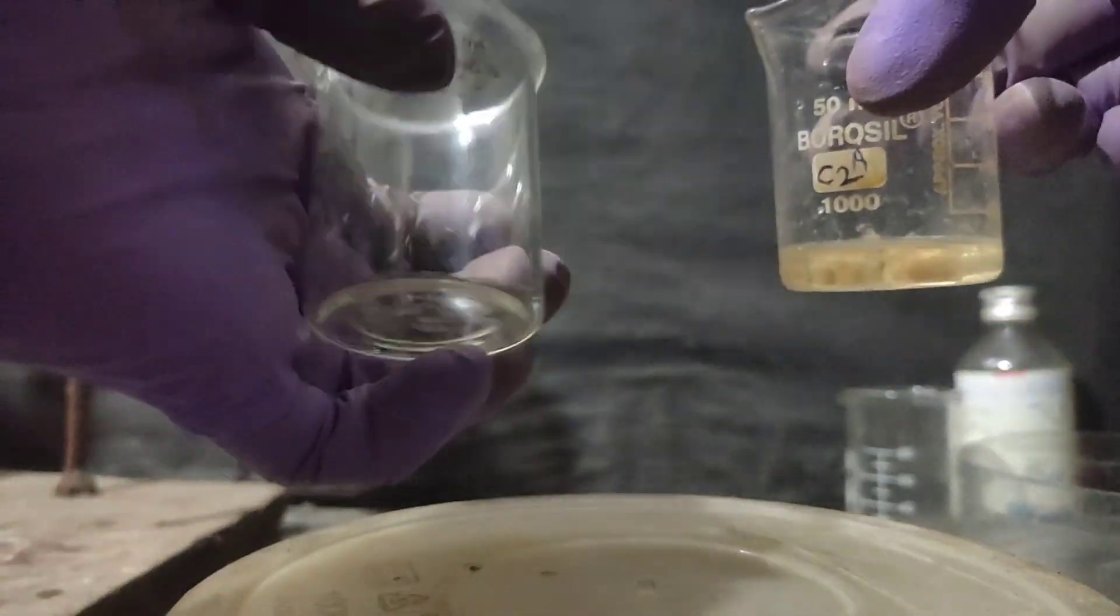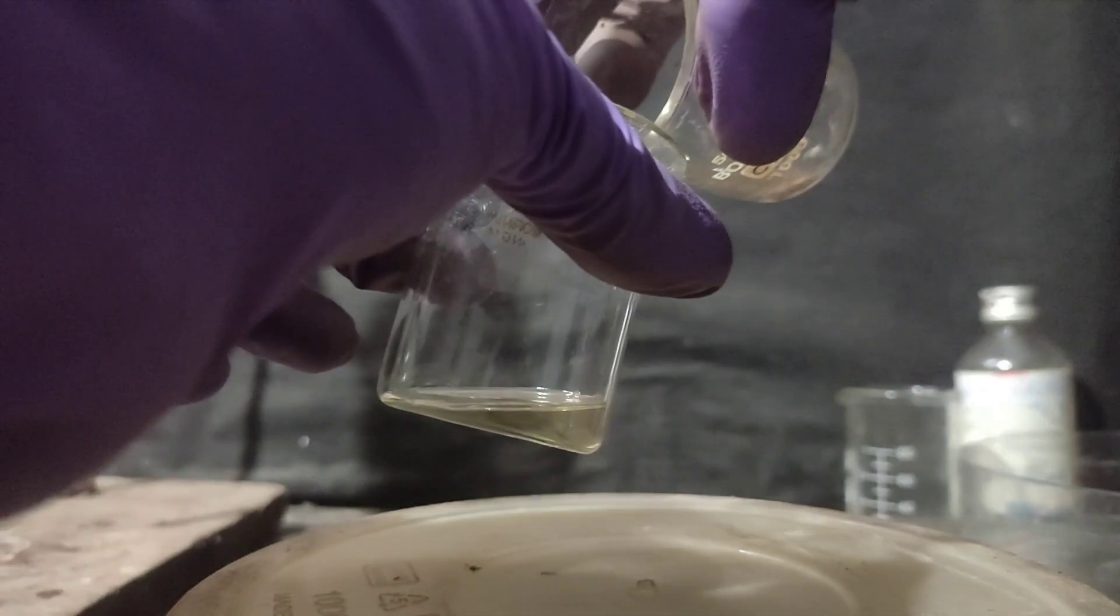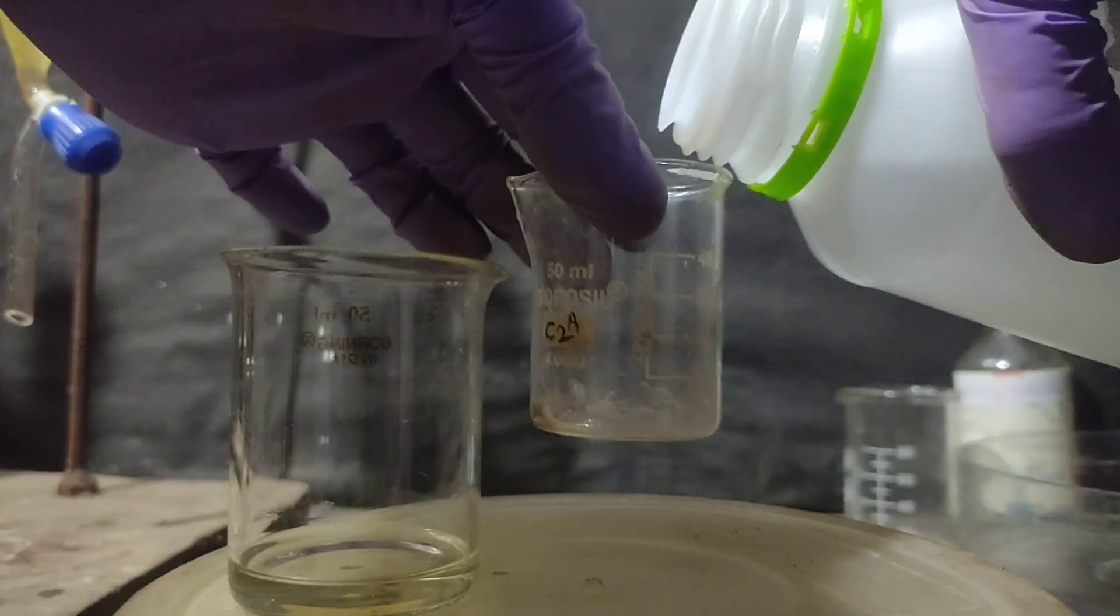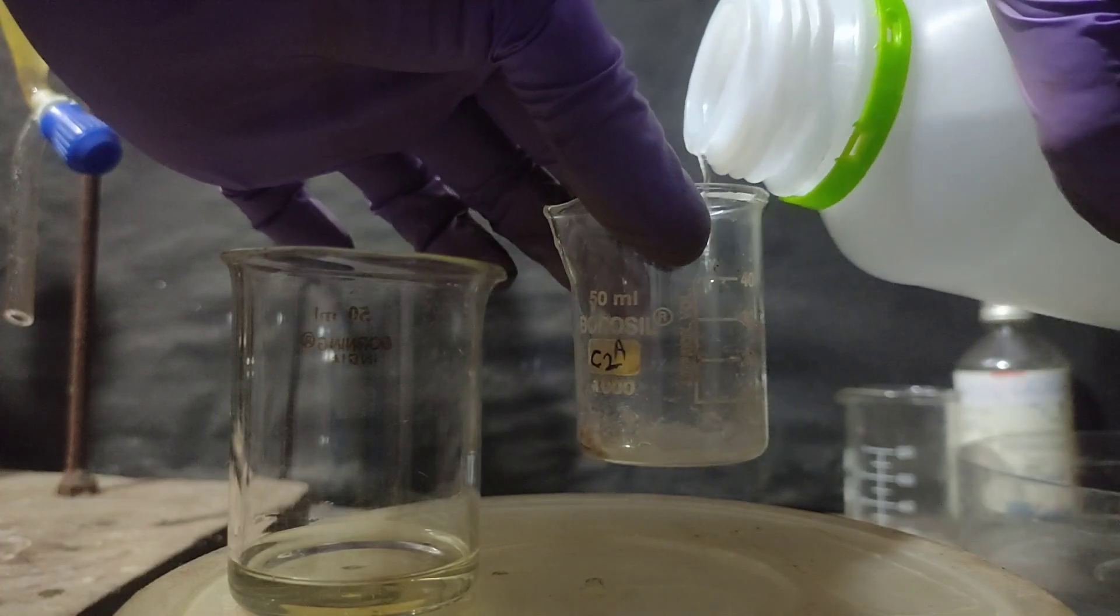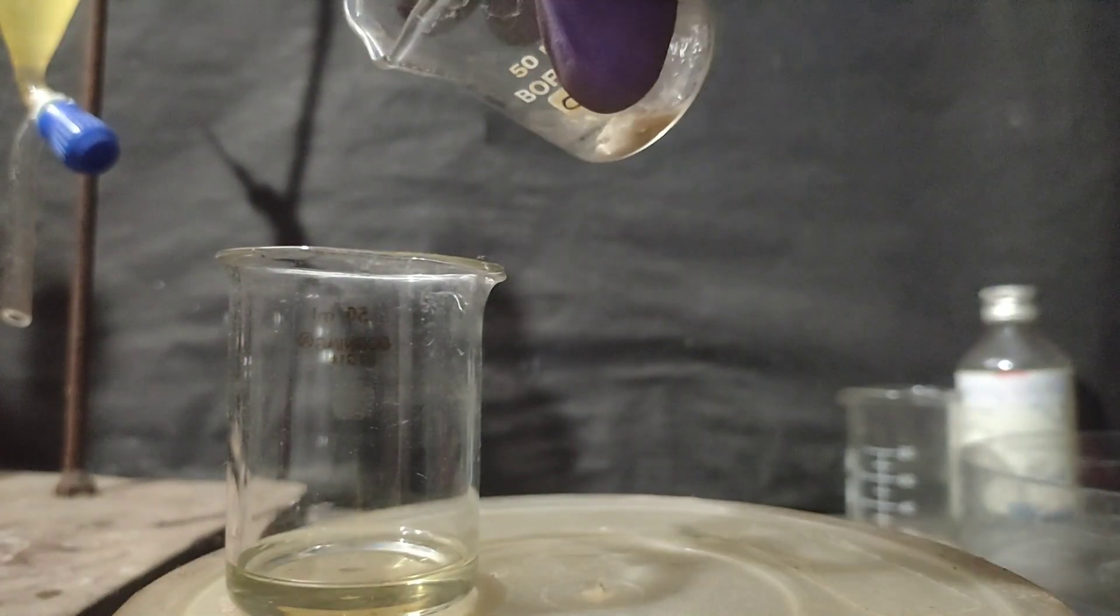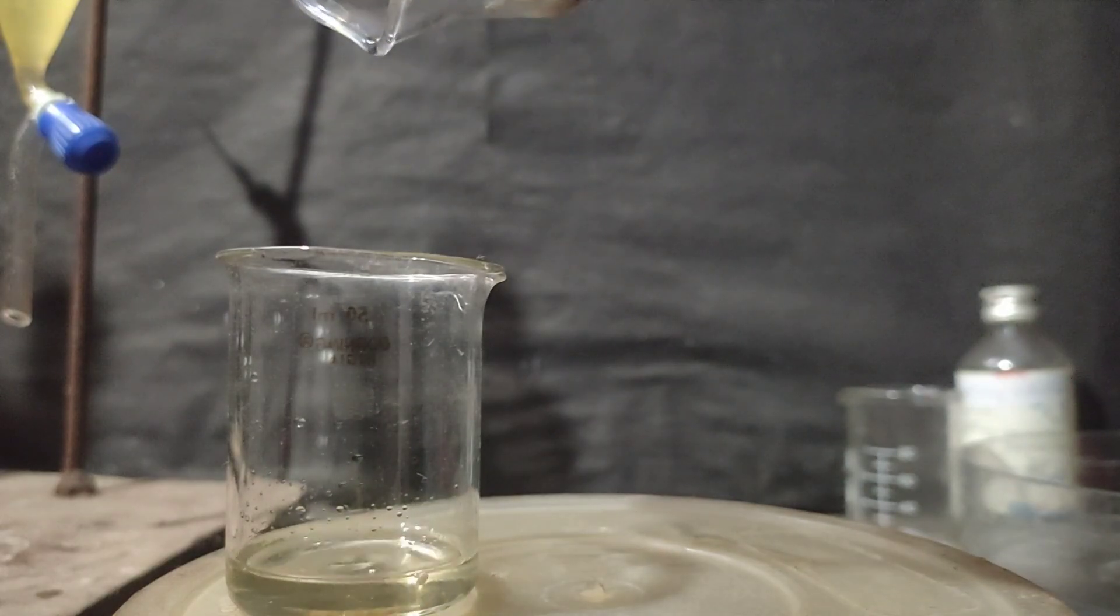After the solution cleared up, I decanted the solution into a dry and clean beaker. I washed the calcium chloride and the beaker with DCM and also transferred it in the same beaker and let it evaporate at room temperature for a day.